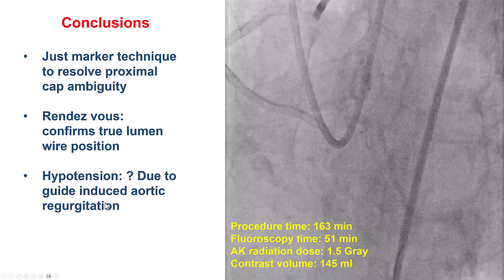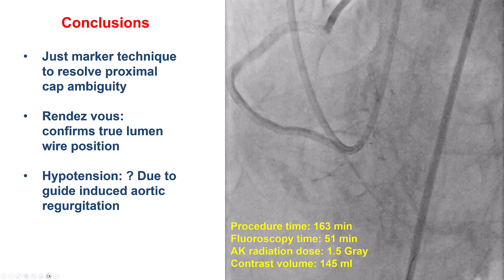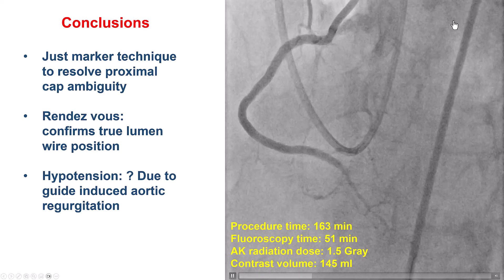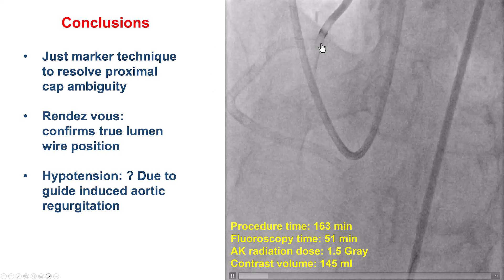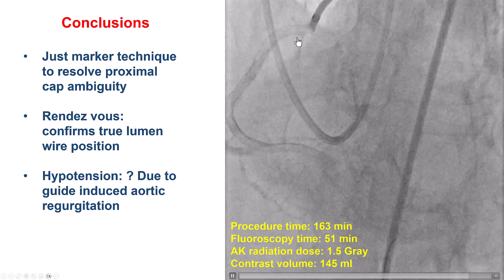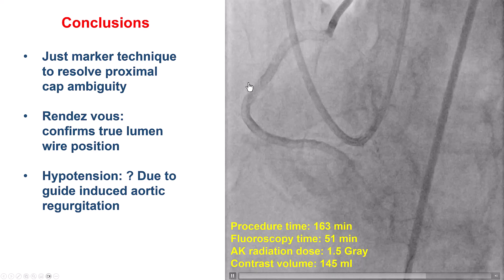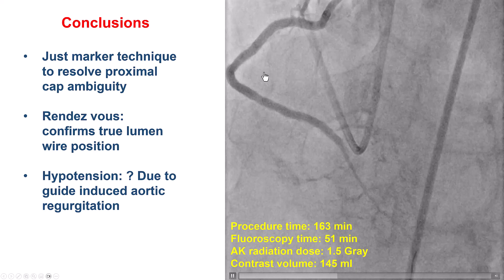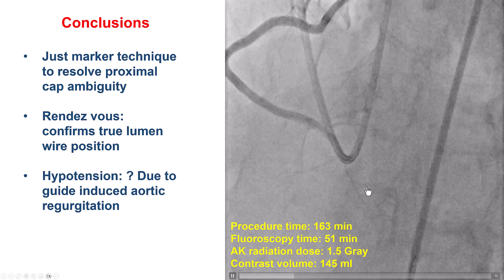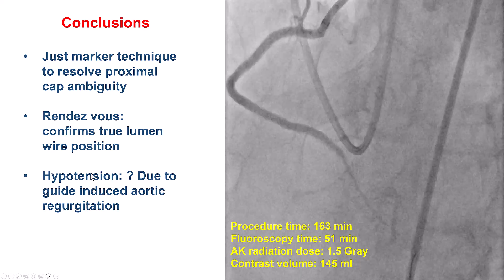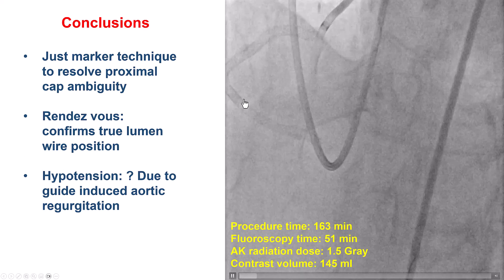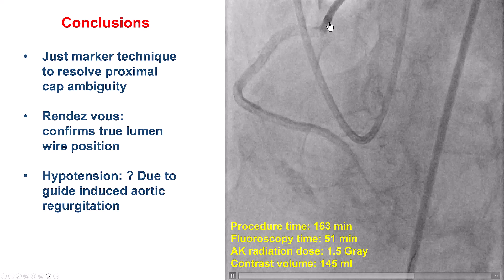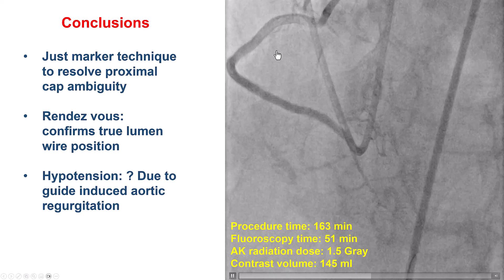Several lessons from this case: first, using a retrograde wire can help resolve proximal cap ambiguity, enabling crossing. Second, a guide extension combined with a different microcatheter — the Corsair XS — allowed delivery to the distal right coronary. The retrograde wire then defined the proximal cap as a target for the antegrade wire, and the rendezvous technique confirmed distal true lumen position and facilitated antegrade equipment delivery. Third, sudden onset of hypotension during CTO or any PCI should prompt immediate exclusion of guide catheter contact with the aortic valve causing aortic regurgitation — simply pulling the guide back is both diagnostic and therapeutic. Thank you.